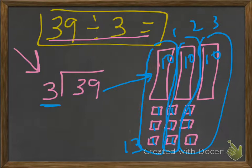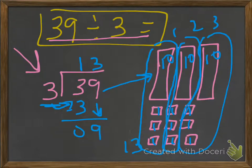And the same can be done if we do the typical algorithm. 39 divided by 3: we know that 3 goes into 3 once, and we subtract. Bring down the 9. 3 goes into 9 three times. 3 times 3 is 9. Subtract and we get zero.